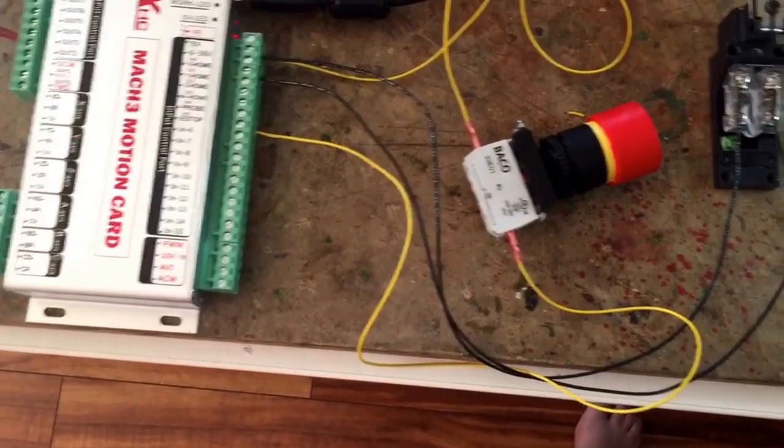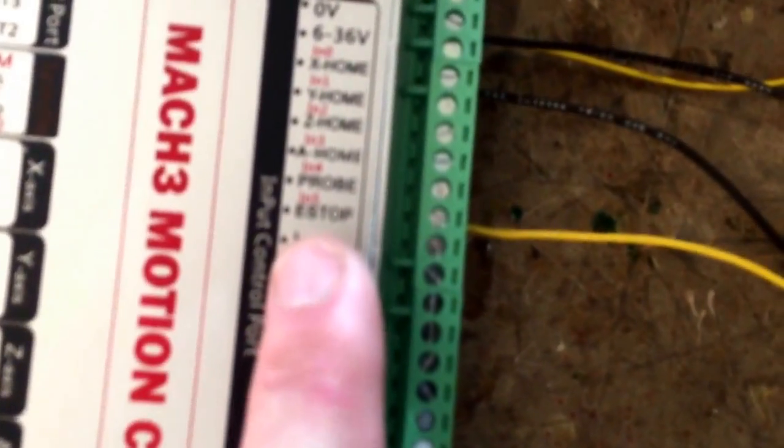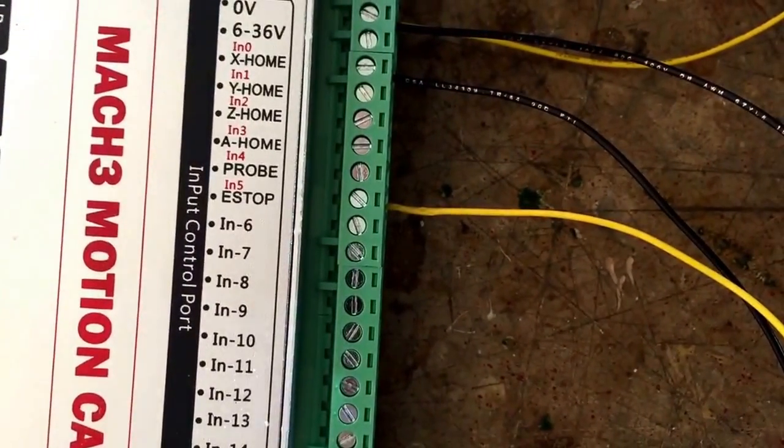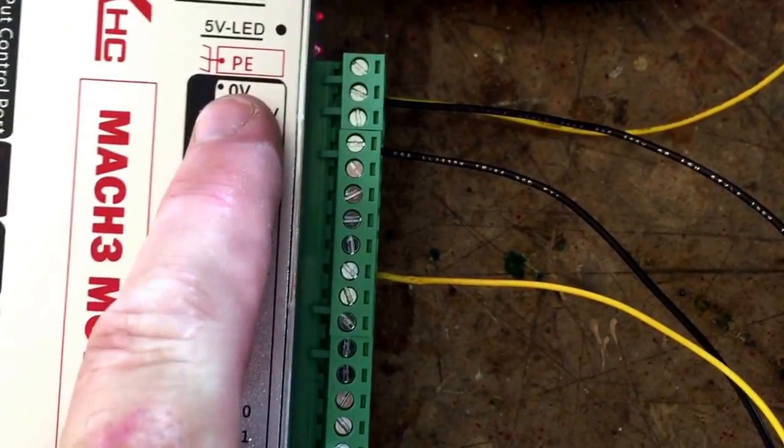So this is how it works. I got this one going to e-stop. There we go. And then they both go to the ground zero volts.